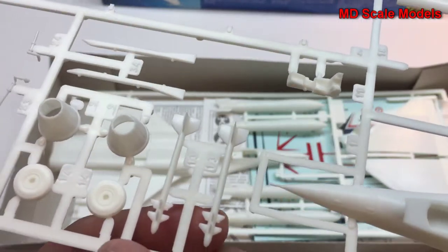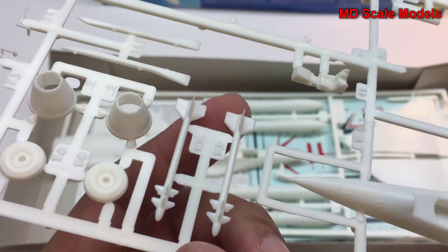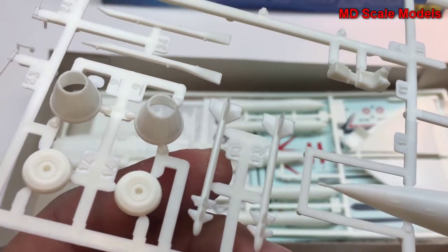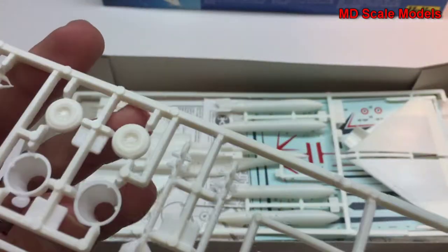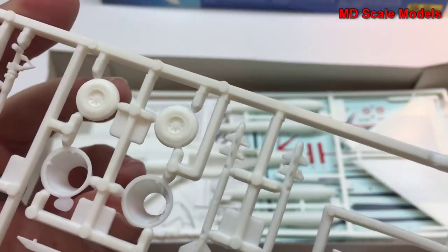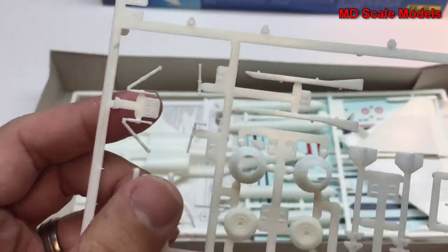There's not much flashing and there really isn't a lot of surface detail. These are quite thick, thicker than I would expect. Here are the exhausts and the wheels with some detail on them, and landing gear parts.